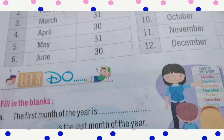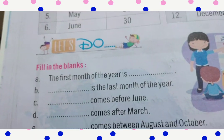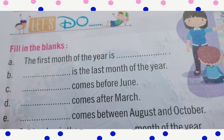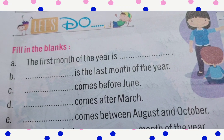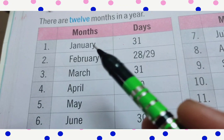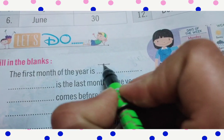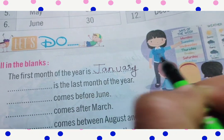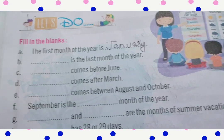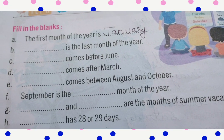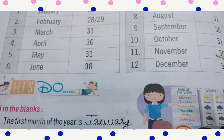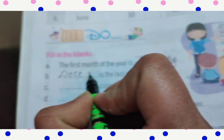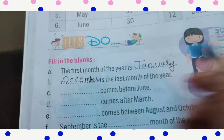Now we can solve the exercise on page 92. There are 12 months in a year. Part A: The first month of the year is January — J-A-N-U-A-R-Y. Part B: The last month of the year is December — D-E-C-E-M-B-E-R.